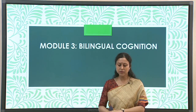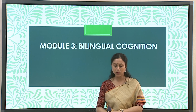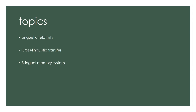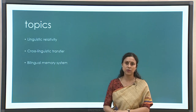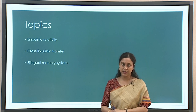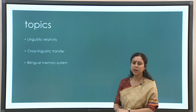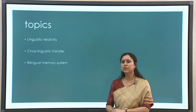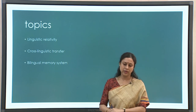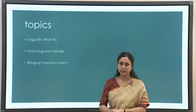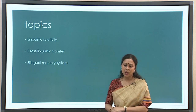Hello and welcome. This is module 3 of the course. In this module we will look at bilingual cognition — how cognitive mechanisms and bilingualism interact with one another. To do that we will take three topics: first, linguistic relativity; then cross-linguistic transfer; and third, the bilingual memory system. With the help of these three subtopics within bilingual cognition, we will try to see how bilingualism and cognition are interrelated and what the nature of that interaction is.